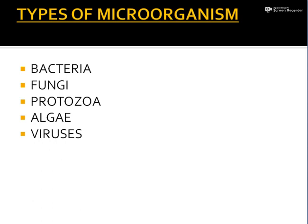Next, we have the types of microorganisms. It can be divided into five parts — five types. The first one is bacteria, fungi, protozoa, algae, and viruses. This explanation you can find on page number 19.